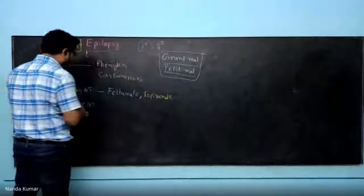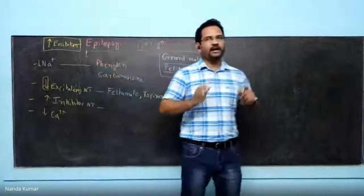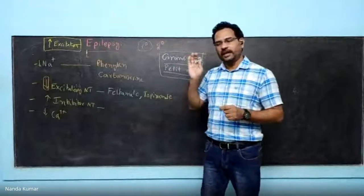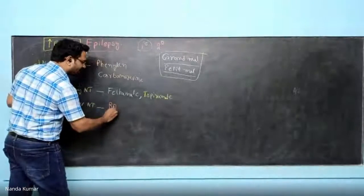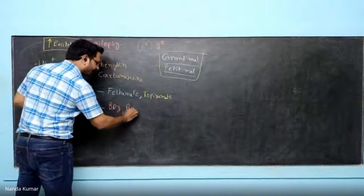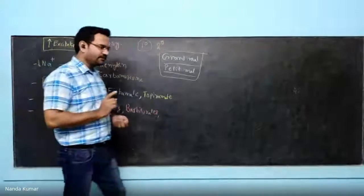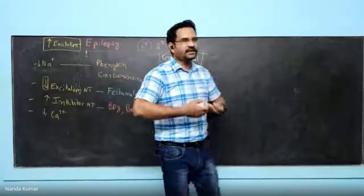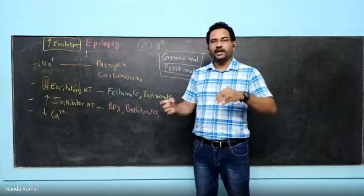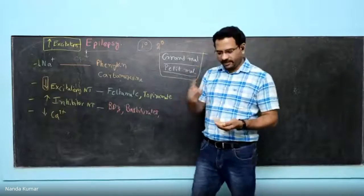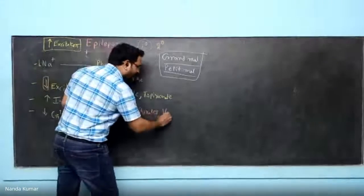The next strategy is enhancing inhibitory neurotransmission. In the brain, the major inhibitory neurotransmitter is GABA — gamma-aminobutyric acid. GABA neurotransmission can be enhanced using benzodiazepines and barbiturates. GABA is synthesized in the neuron, and once released it is metabolized by the GABA-transaminase enzyme. That GABA-transaminase enzyme is inhibited by a specific drug called vigabatrin.